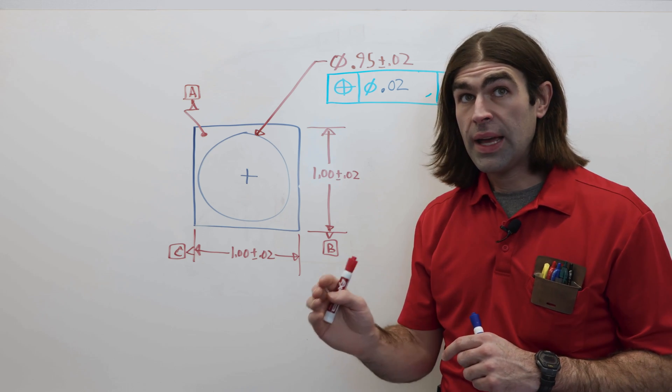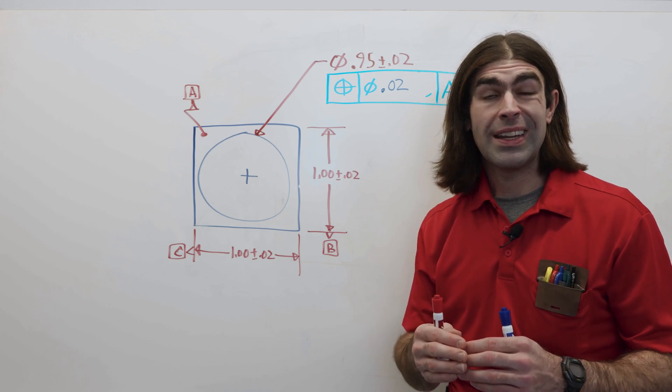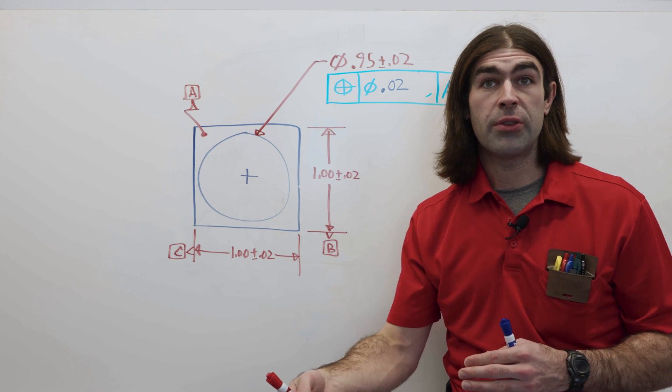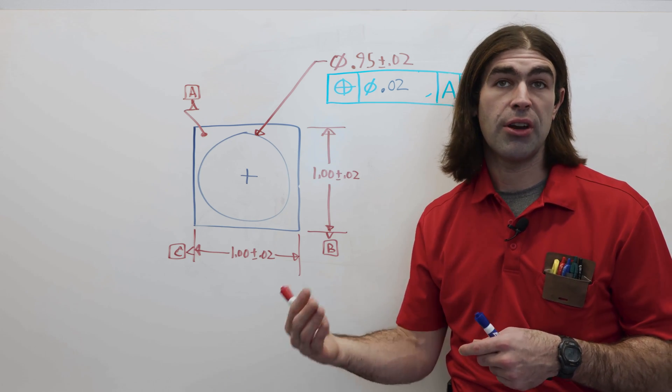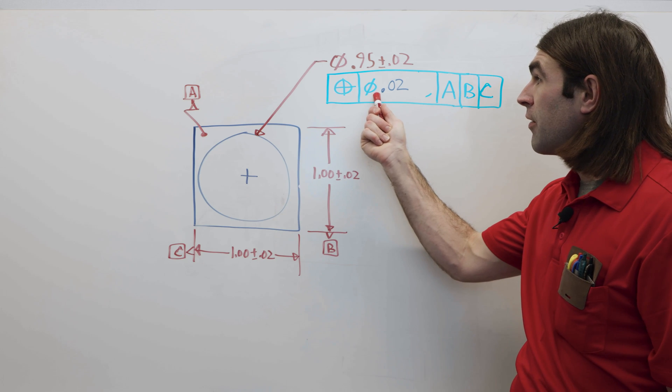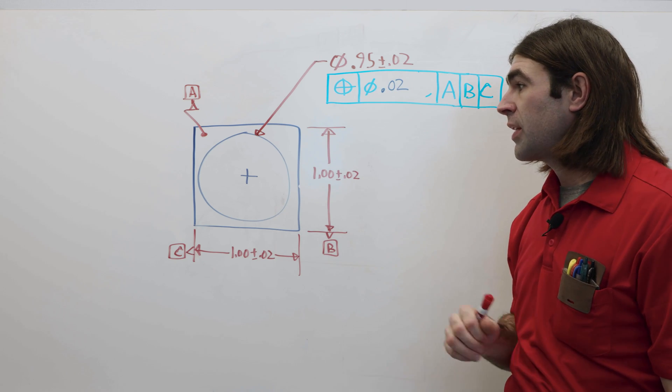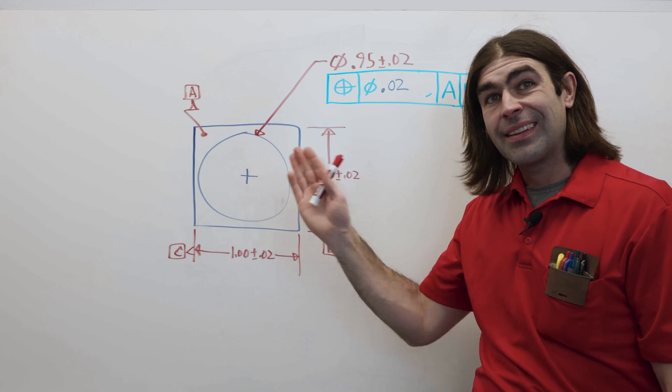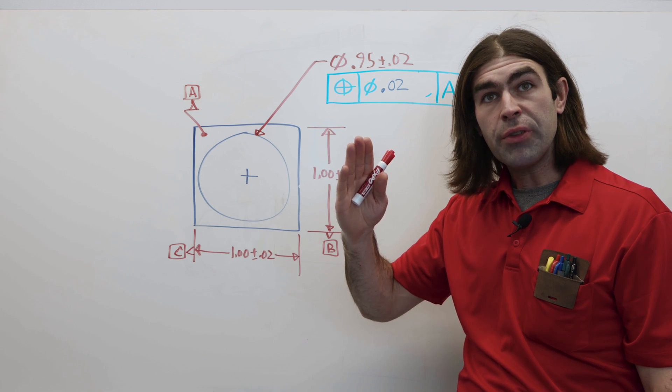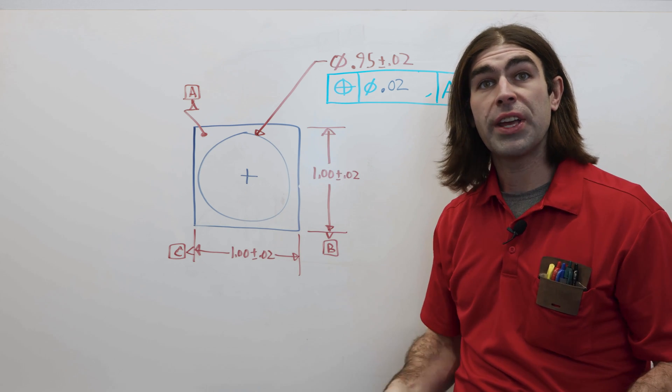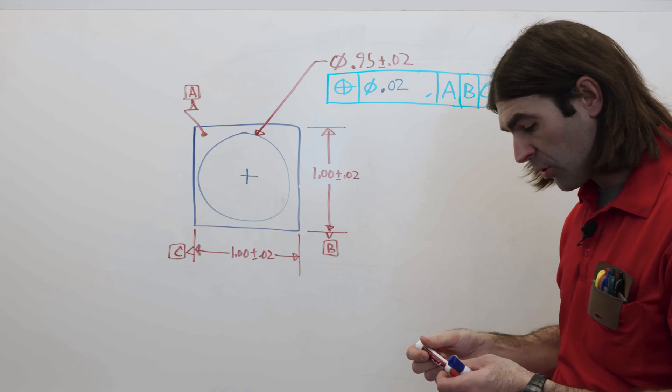But, when you add a geometric tolerance, you're increasing the amount of tolerance you have and you're adding variation. So, what I mean is when you have this diameter tolerance zone of 20 thousandths, now the axis of this hole can be tilted and that's going to make the hole take up more space.